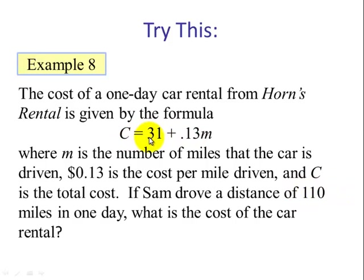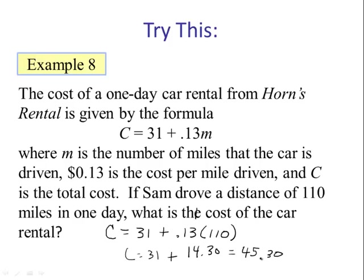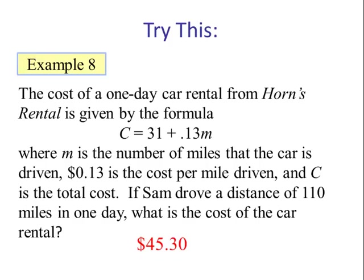So we would take the equation: C equals 31 plus 0.13 times the number of miles, which is 110. We multiply before we add. This becomes 14.30 plus 31. Now we add, and we see that this is 45.30. So the answer is $45.30.